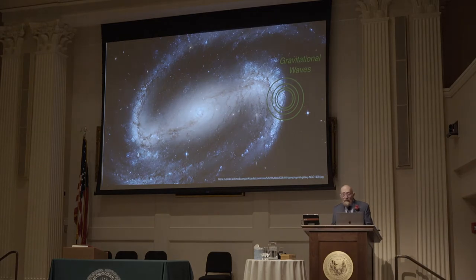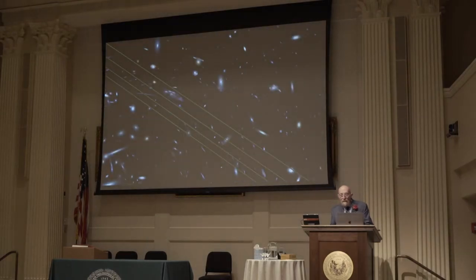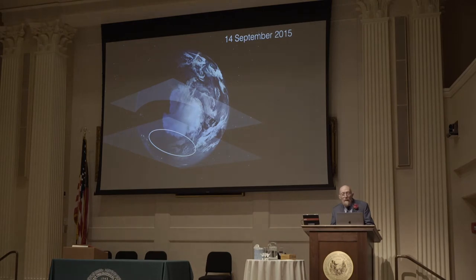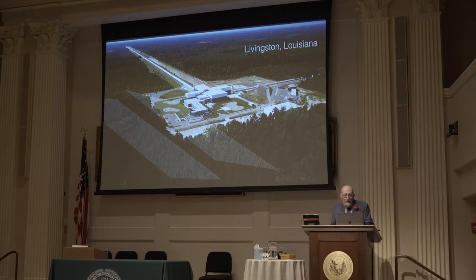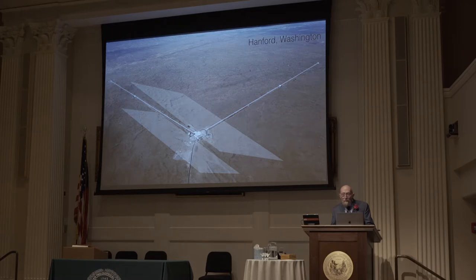The waves traveled outward from the galaxy in which they were born 1.3 billion years ago, when multi-cell life was just forming on Earth. They traveled out through that galaxy into intergalactic space, arrived at the outer edges of our Milky Way galaxy 50,000 years ago, when our ancestors were sharing the Earth with the Neanderthals. They entered our Milky Way galaxy, reached the Earth on 14 September 2015, touched down at the Antarctic Peninsula, traveled through the Earth unscathed, and arrived at Livingston, Louisiana, at one of our two LIGO gravitational wave detectors. Seven milliseconds later, the other one at Hanford, Washington.